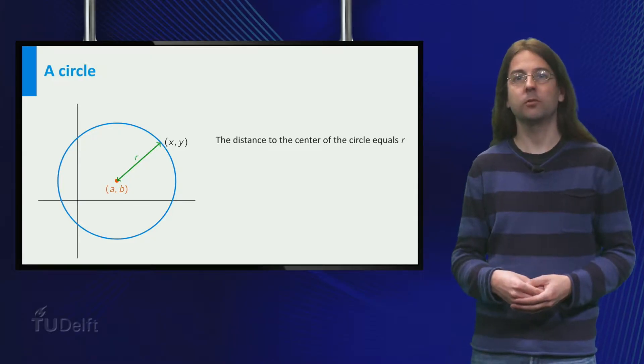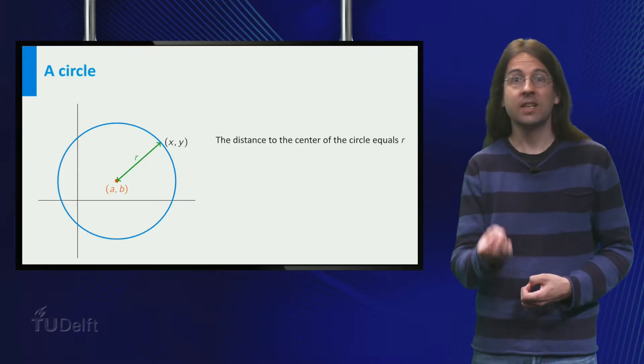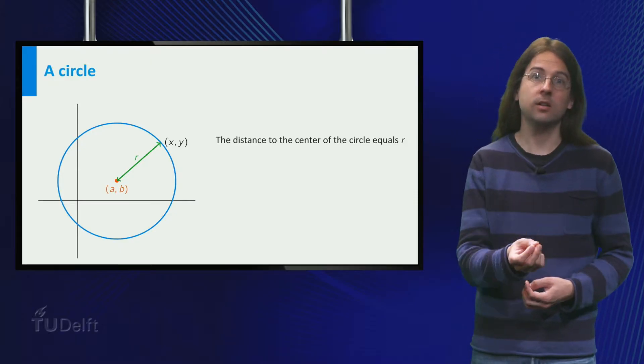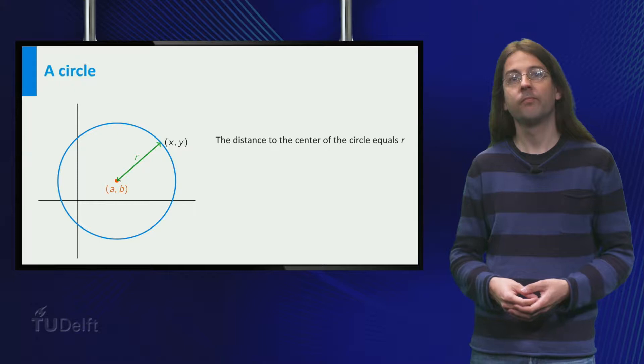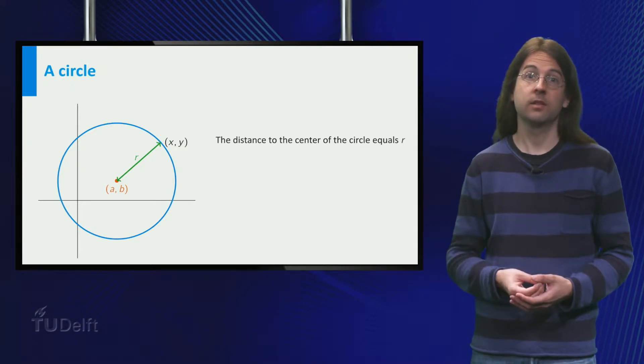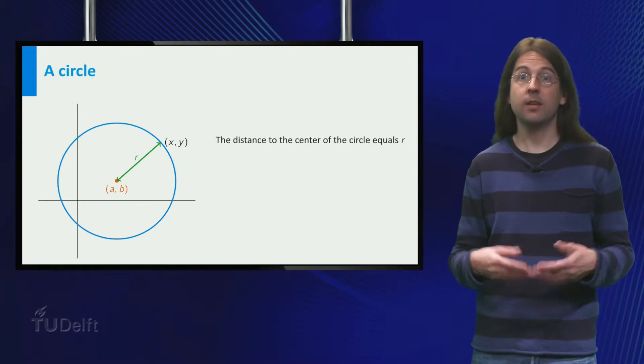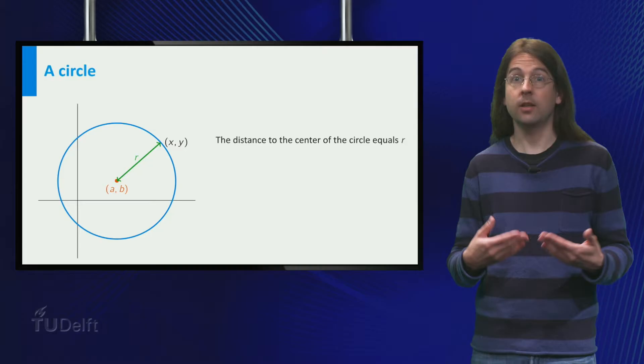Let us begin with the formula for a circle. A circle is the set of all points at the same distance r of its center ab. This distance r is called the radius. As we have a mathematical expression for distance, we can translate this sentence into a formula.